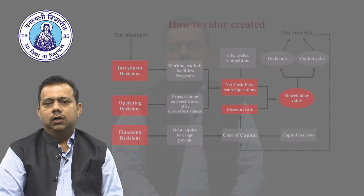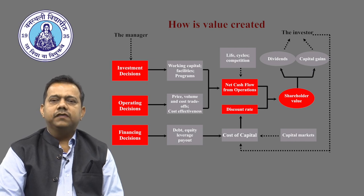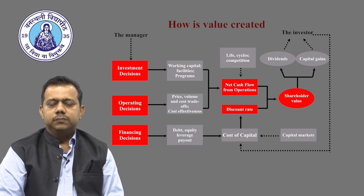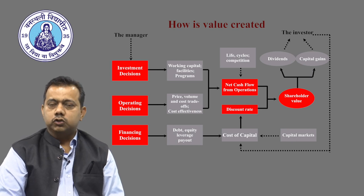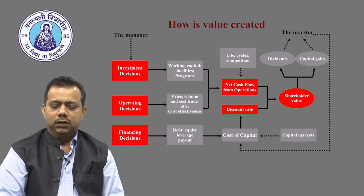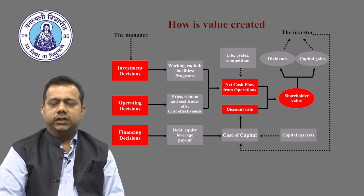Value is created using three functions that a finance manager performs. The first function is the investment decision, which relates to where investments need to go — how investments need to be allocated between fixed assets and working capital — and this decision helps determine what is called the net cash flow from operations.